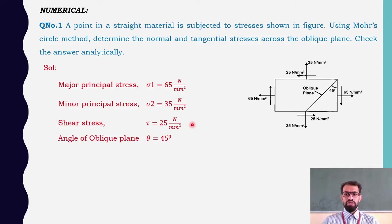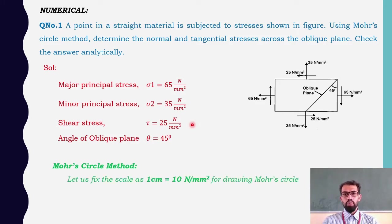The Mohr circle is to be drawn on graph paper with a specific scale. We fix the scale as 1 cm = 10 N/mm² for drawing the Mohr circle. Note that this scale is not fixed for all problems — it will vary depending upon the values of the stresses given in the question.